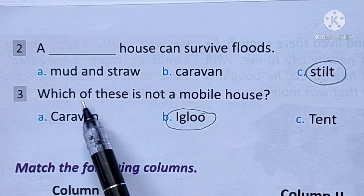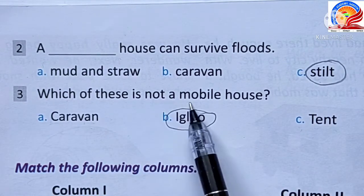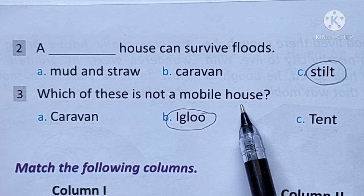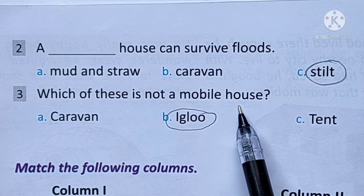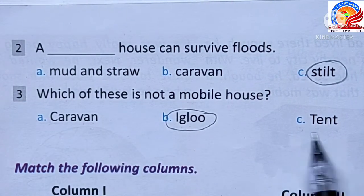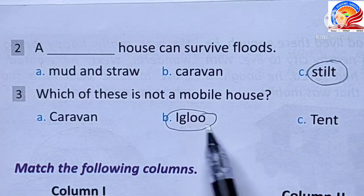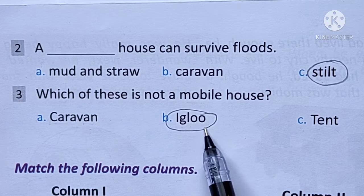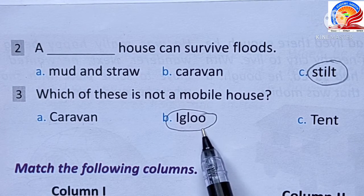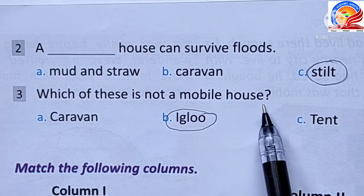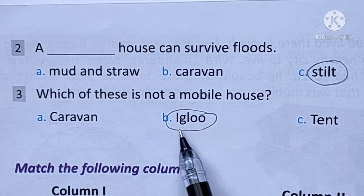Which of these is not a mobile house? The answer is igloo. An igloo is a house made of snow.